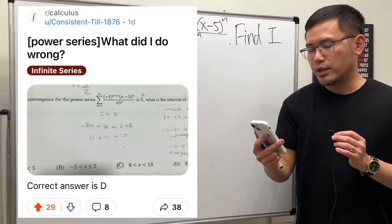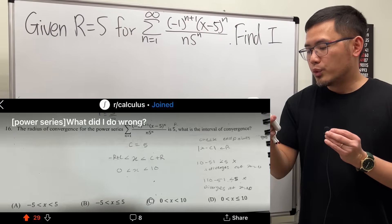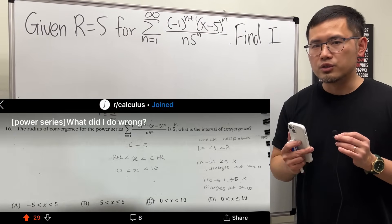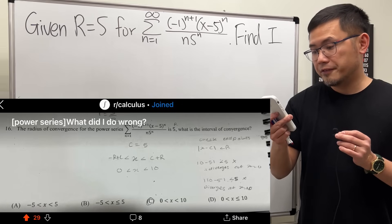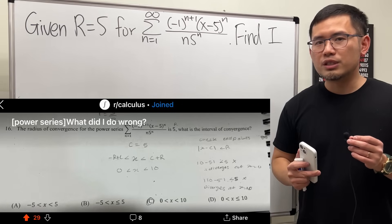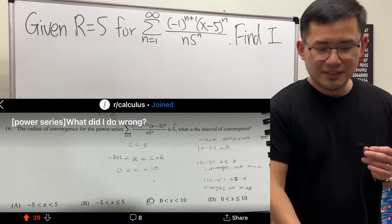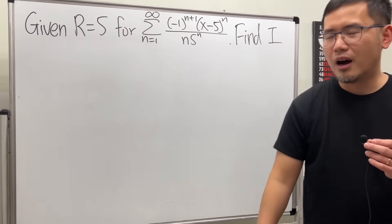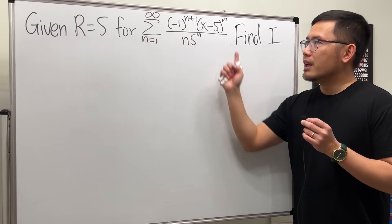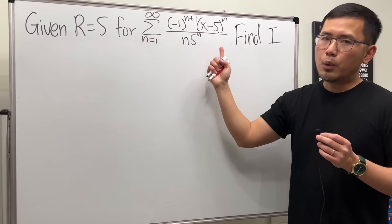Power series — here's the question: we have this power series and we are given the radius of convergence is 5, and we are going to find the interval of convergence for the power series. Definitely one of the hardest topics in Calc 2.